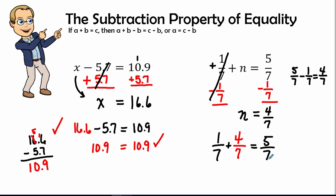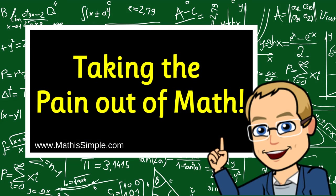Therefore, 1 plus 4 is 5, with the same denominator of 7. The answer checks.